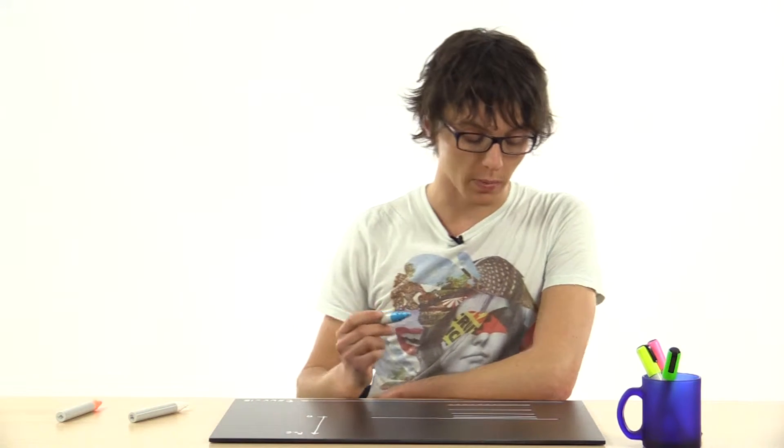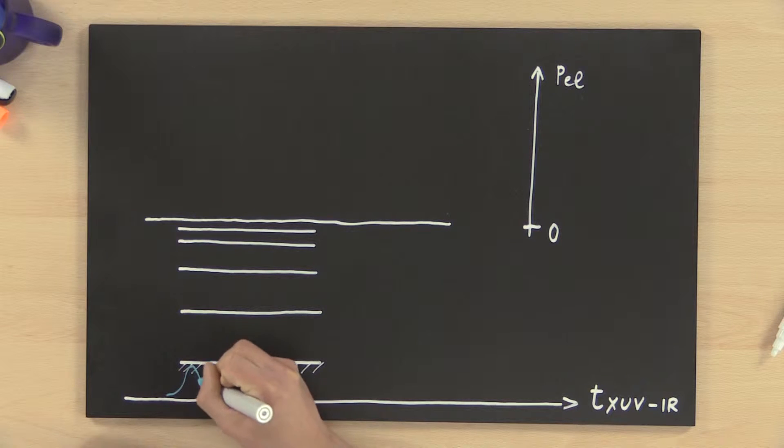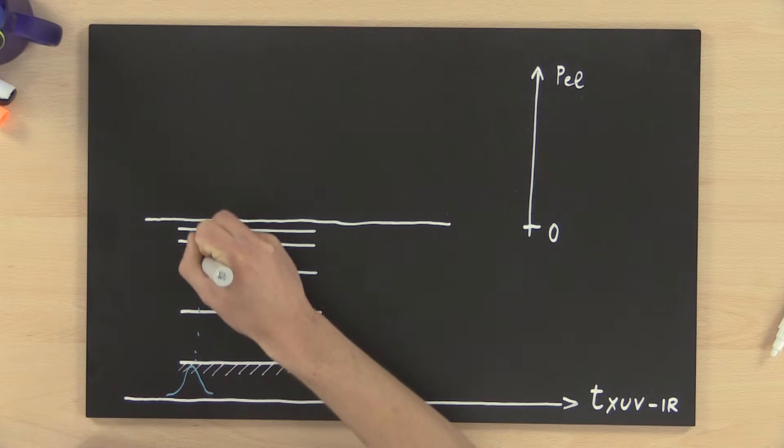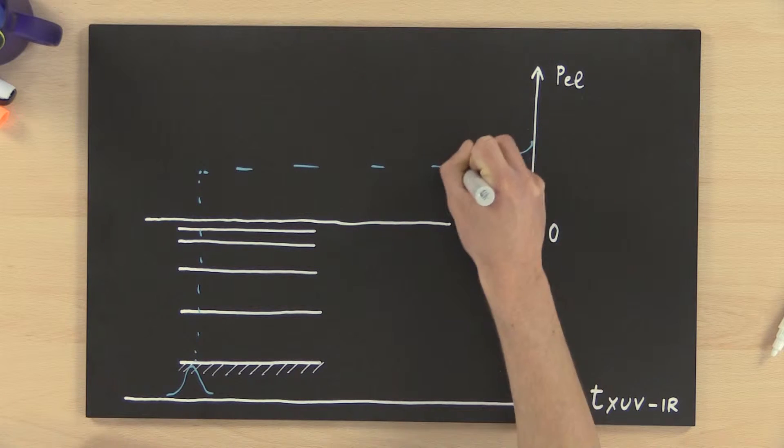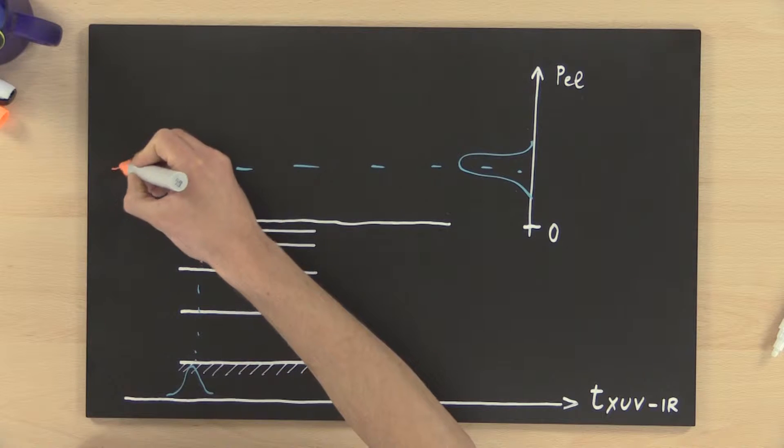Temporal characterization of sub-femtosecond XUV pulses generated by high-order harmonic generation is usually performed via the so-called attosecond streaking technique. It consists of a two-color photoelectron experiment, usually performed on a noble gas, where an XUV attosecond pulse triggers the ionization of the medium, and a delayed, visible, near-infrared pulse is used as a streaking field.